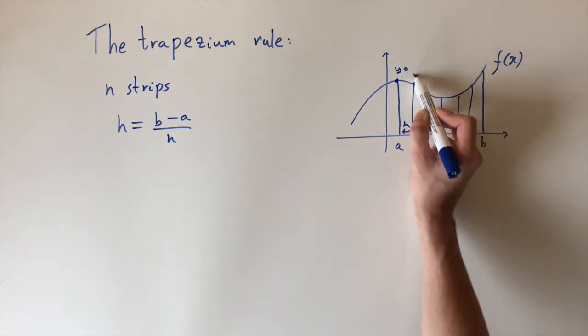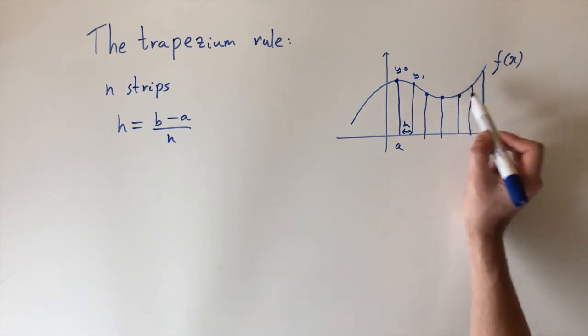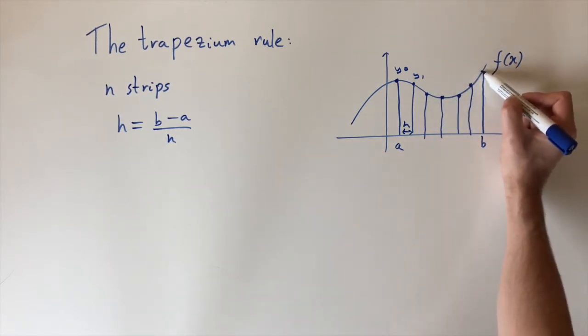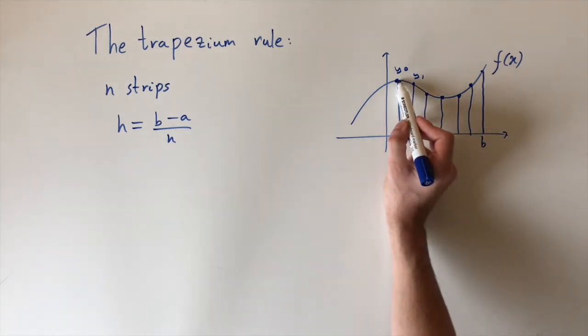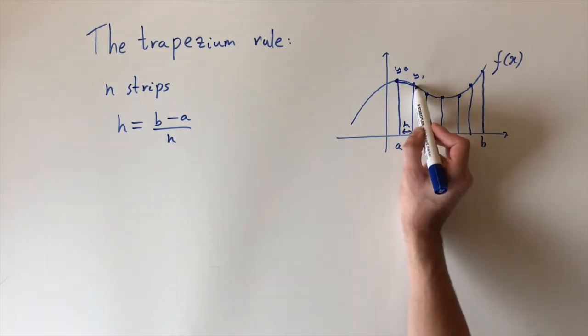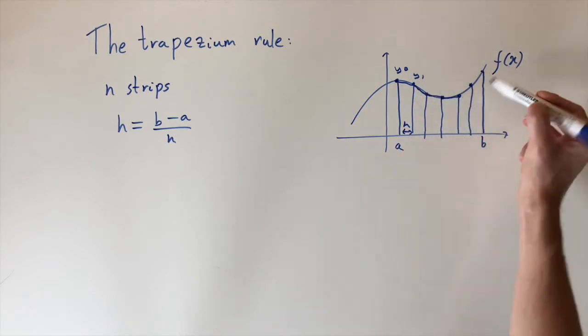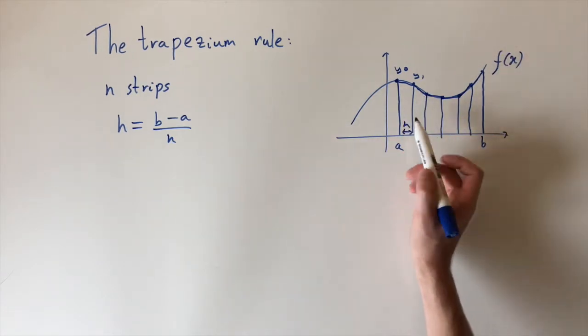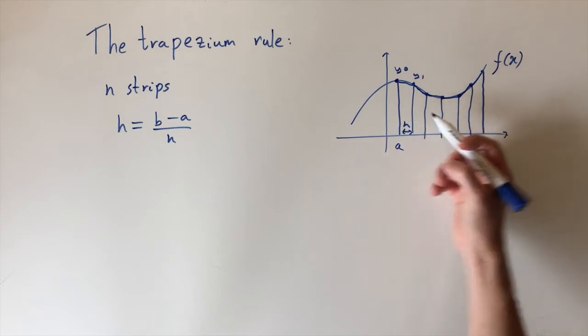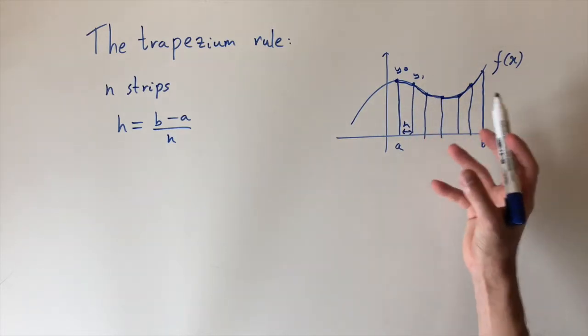Now what we do is we look at the function evaluated at these points. So if I call this y0, this one y1, this would be y2, etc. We look at the function evaluated at just these interval points and then think about joining up a straight line between these points, which creates lots of trapeziums. We have lots of trapezia, and so an approximation of the area is just by finding the area of each trapezium and adding these up.